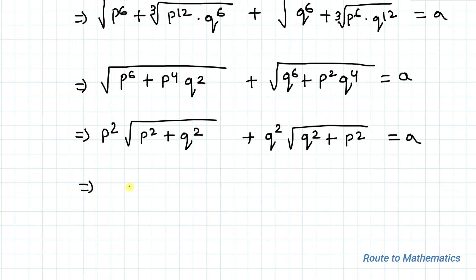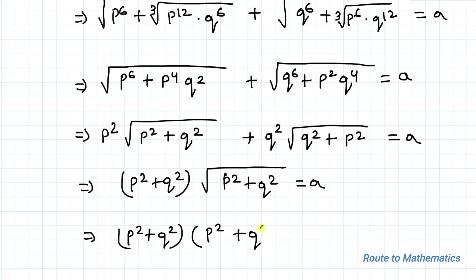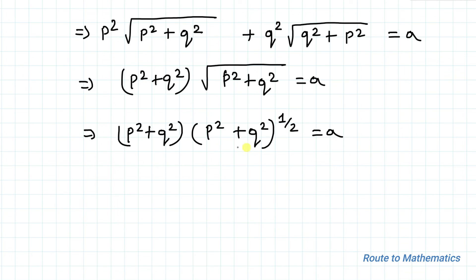This implies we can write (p² + q²) · √(p² + q²) = a, which is (p² + q²) · (p² + q²)^(1/2) = a. Since the bases are the same, we add the exponents and get (p² + q²)^(3/2) = a.